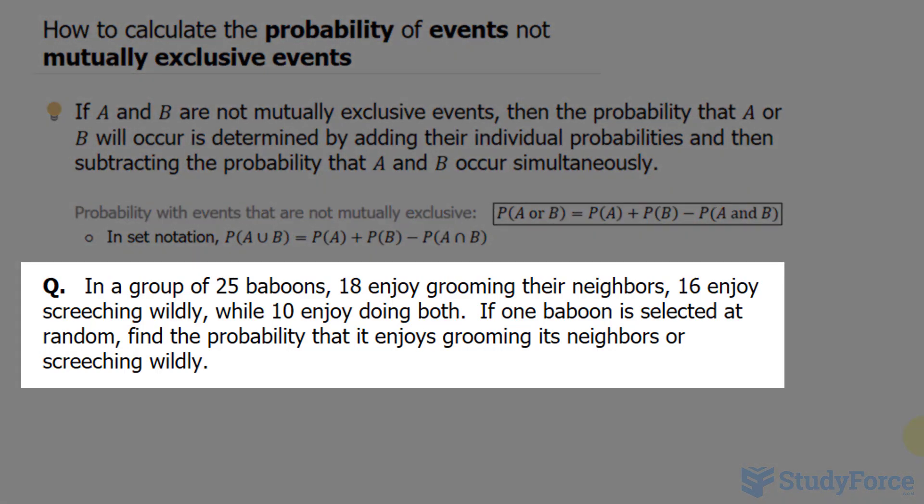Our question reads: in a group of 25 baboons, 18 enjoy grooming their neighbors, 16 enjoy screeching wildly while 10 enjoy doing both. If one baboon is selected at random, find the probability that it enjoys grooming its neighbor or screeching wildly.